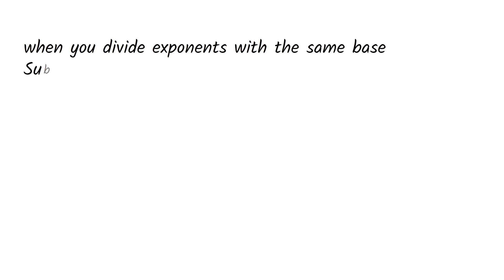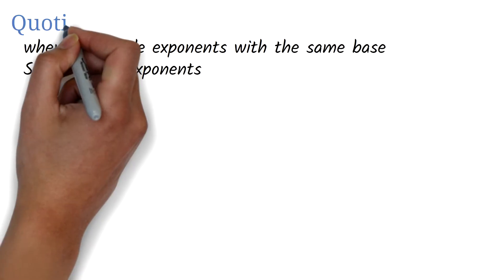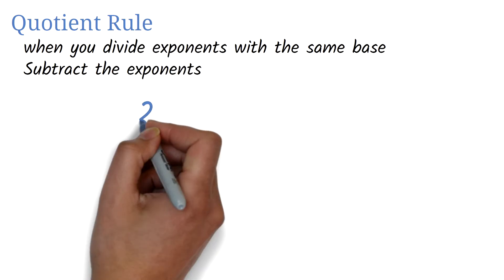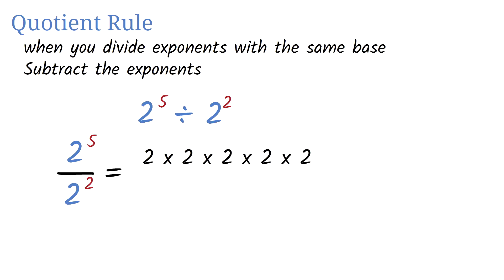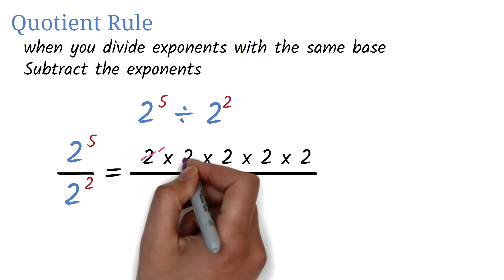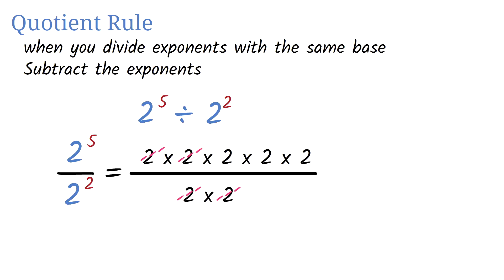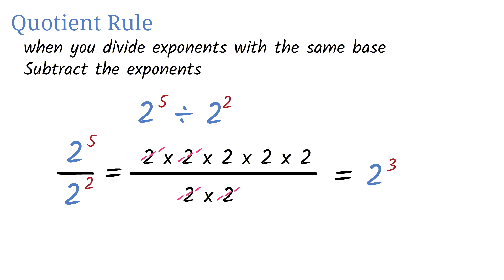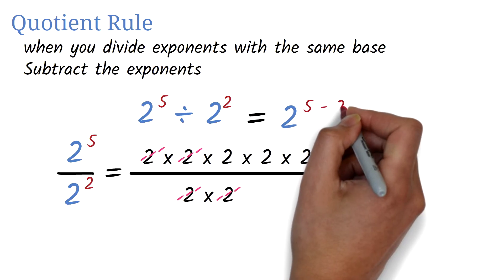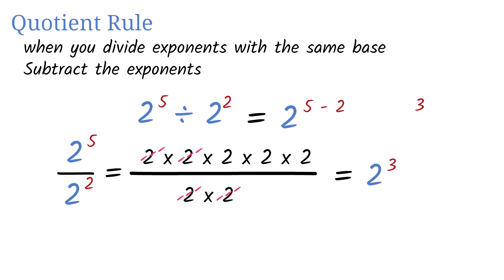Let's look at division. When you divide two exponential expressions with the same base, all you will do is subtract the exponents. This is known as the quotient rule. For 2 exponent 5 divided by 2 exponent 2: 2 exponent 5 is 2 times 2 times 2 times 2 times 2, and 2 exponent 2 is 2 times 2. We cancel out the common 2s, leaving 2 times 2 times 2, which is 2 exponent 3. Instead of that extended step, we could have just subtracted: 5 minus 2 equals 3, giving us 2 exponent 3.